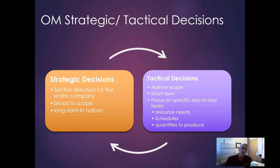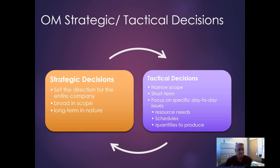When we have strategies from an operations management standpoint, those strategies are long-term thinking and they direct what type of tactical decisions we make to execute them. Think of it as: there's the plan, and then there are the actions that make the plan happen. Strategic decisions are long-term and broad in scope — directing the entire company toward some vision. Tactical decisions are more narrow in scope and short-term, focused on day-to-day matters like resources needed, schedules, and how much to produce.